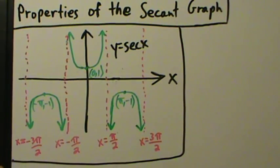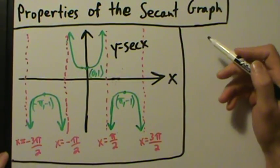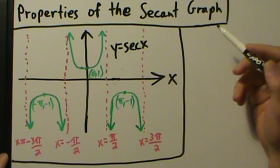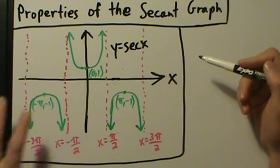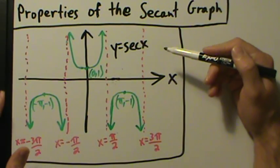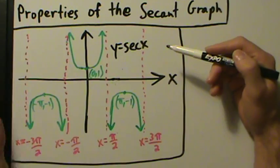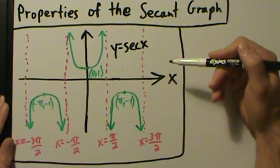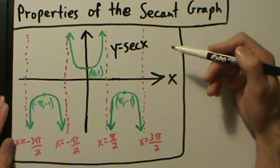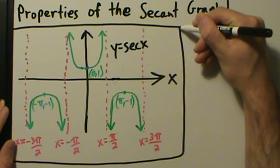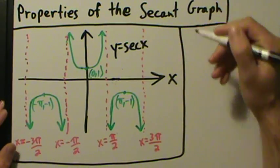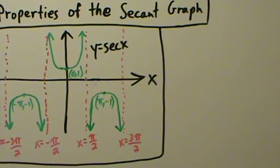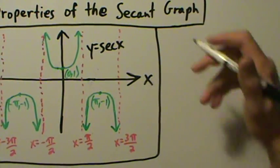In this video we're going to talk about some of the properties of the secant graph. In the last video we talked about the graph itself and why it looks the way it does — we plotted some points, plotted the asymptotes, things like that. Now we're going to talk about some of these properties, similar to the property videos for the tangent and cotangent graphs.